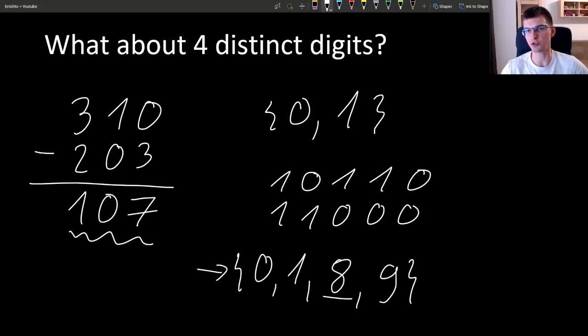The answer, the difference of 2 binary numbers of the same length, can give you only those digits in the answer, so we satisfy the condition about 4 distinct digits.